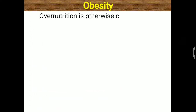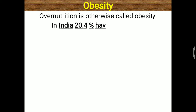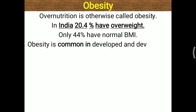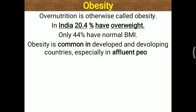First, over-nutrition in any form is called obesity. In India also, 20.4% of people are overweight, and only 44% have a normal body mass index. So obesity is common in developed as well as developing countries, especially in affluent people.